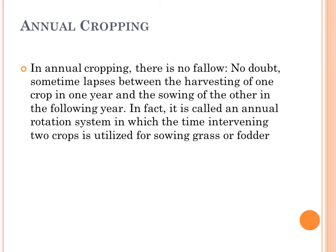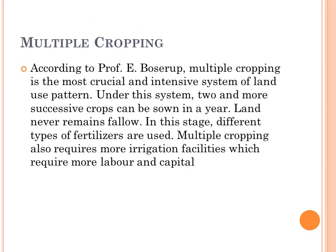Then there is annual cropping, where every year a particular land is cultivated and there is no situation where the land is left unattended. The lapse between the harvesting of one crop and the sowing of the next is very short. In fact, it is called the annual rotation system, in which the time between two crops is utilized for sowing grass.